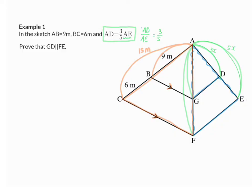So I'm going to start off in triangle ACF, and in this triangle I know that BG is parallel to CF. Because I know that, I can say that AG over AF — the one we want to calculate — will be the same as AB over AC, and that is 9 over 15.